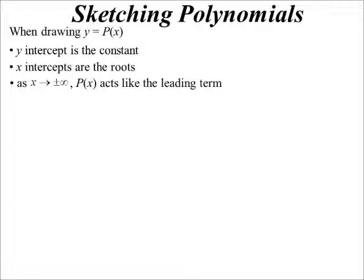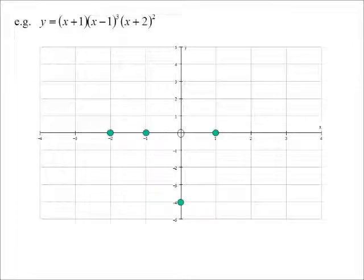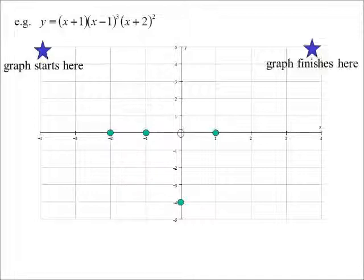Where that's useful is it can tell us where we start drawing the graph and end up. Because it'll do exactly the same as if I had just said, draw the leading term. So the leading term here, we'd have x times x cubed, which is x to the 4, times x squared, x to the power of 6. So if I'd said to you, hey, draw x to the power of 6, you would have drawn a U shape. So we know this will start and finish like x to the 6. So I'll start up there, and I know the graph will finish up there.